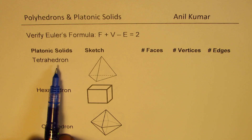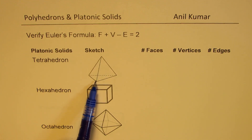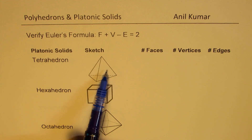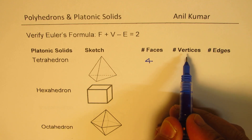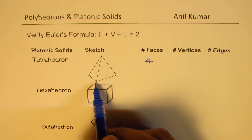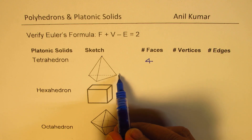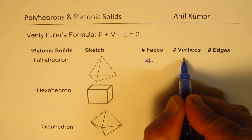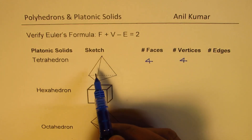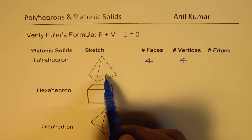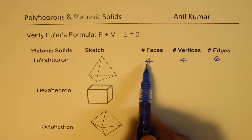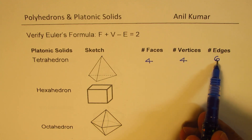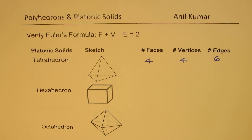The tetrahedron is formed by 4 triangular faces, as you can see here — 1 at the base and 3 triangles on the sides. So the number of faces is 4. As far as the vertices are concerned, we have 4 vertices. The edges you can count as 1, 2, 3, 4, 5, 6 — so we have 6 edges. You can clearly see that 4 plus 4 is 8, which is 2 more than 6. So it verifies Euler's formula.